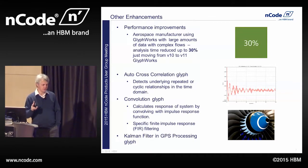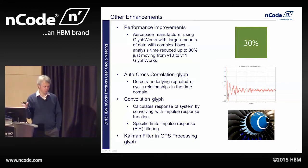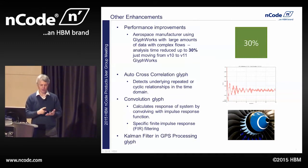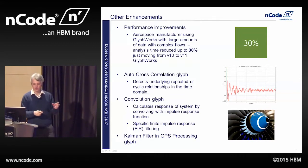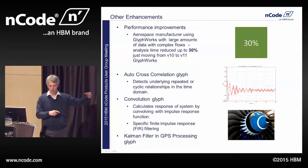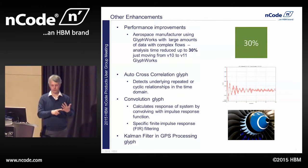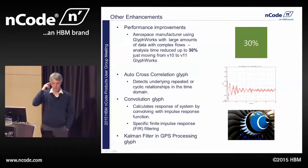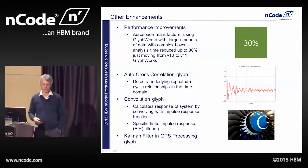We've introduced a couple of new glyphs. The first is auto and cross-correlation for detecting underlying repeated cyclic relationships in the time domain — if you've got the same feature repeated, it identifies where those are and the time split between them. The second is a convolution glyph, which calculates the response of a system by convolving it with an impulse response function — similar to the Fourier-based filter we already have, but done in the time domain. We've also added a Kalman filter to the GPS processing glyph as an extra option, providing more help in filtering GPS data.